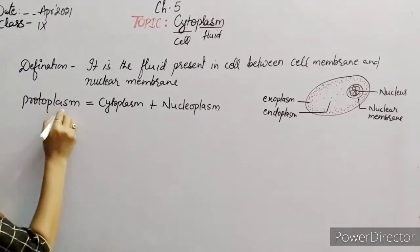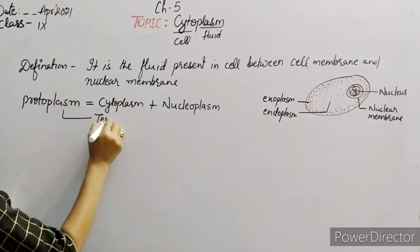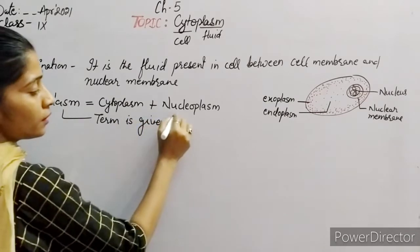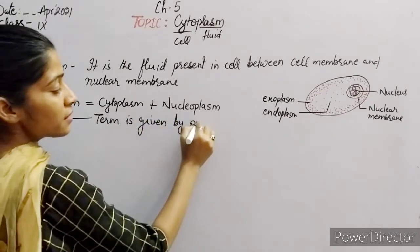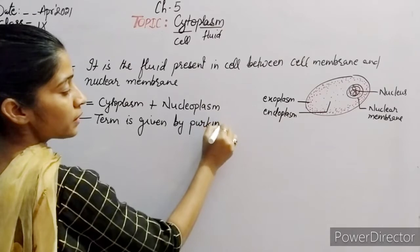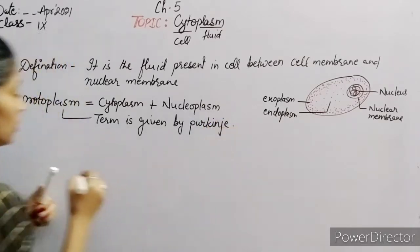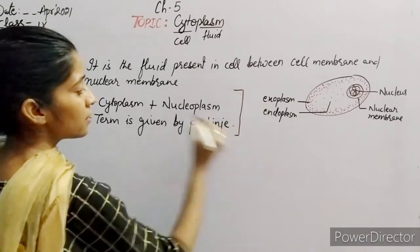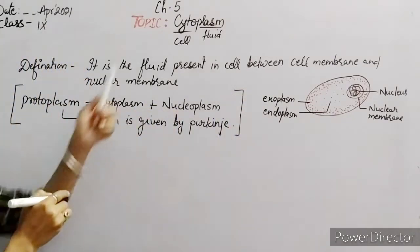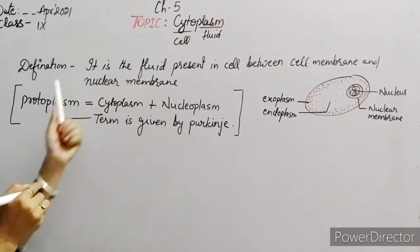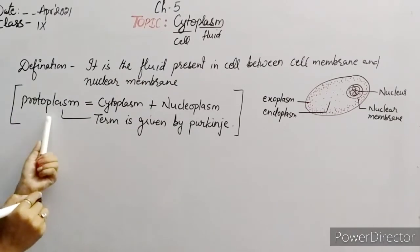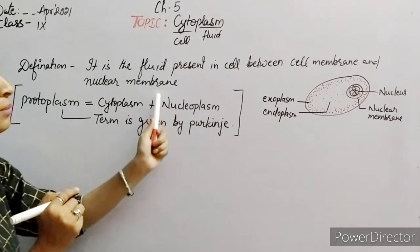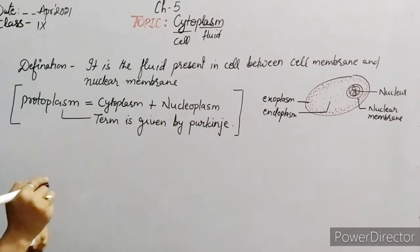So one more term is there — that is protoplasm. This term is given by the scientist Purkinje. What is the difference between cytoplasm and protoplasm? Cytoplasm is the fluid between the cell membrane and nuclear membrane. But protoplasm equals cytoplasm plus nucleoplasm — the total fluid of the cell.